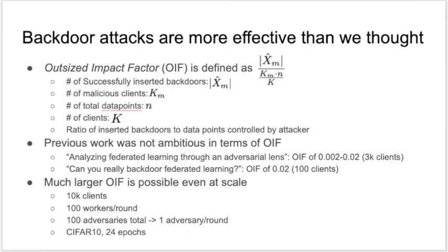To understand why model poisoning attacks are more effective than we thought, and to compare attacks across different settings and system scales, we introduce a new metric called the Outsized Impact Factor, or OIF. The formula is the ratio of the number of successfully inserted backdoors to the number of data points controlled by the adversaries — the latter being the number of adversaries multiplied by the number of data points divided by the number of clients. Intuitively, we believe that even a naive attacker should be able to obtain an OIF of one — in other words, misclassify as many points as it controls.